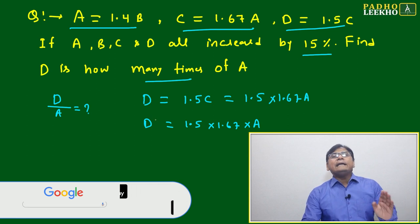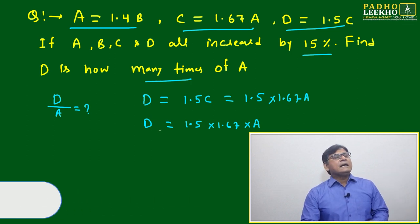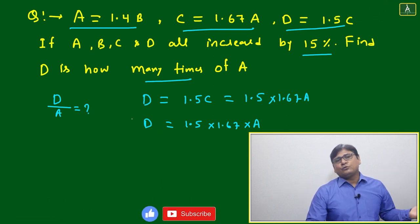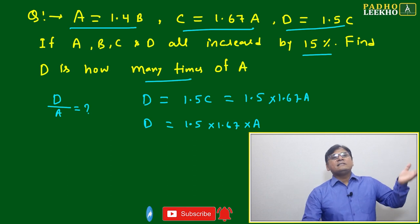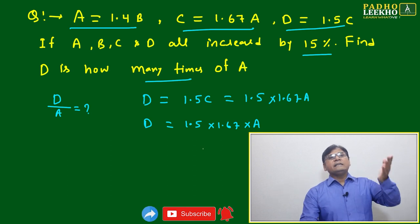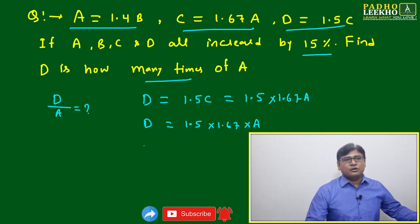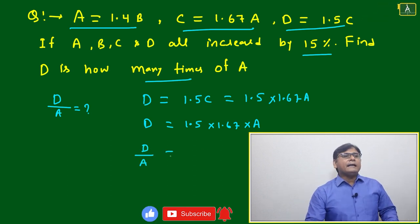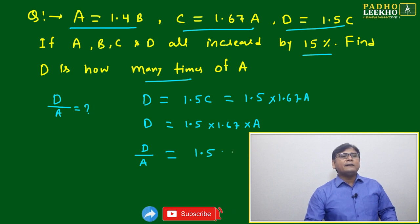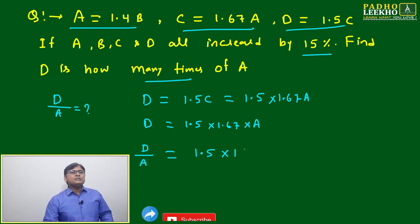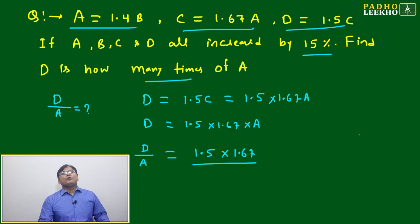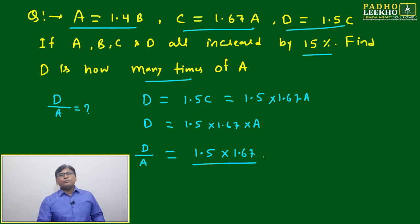So d equals 1.5 into 1.67 into a. If a and d both are changing by 15 percent, it is not going to affect your answer because d will also increase and a will also increase — both will be canceled out. Now we have to find d by a, which means we just have to find the multiplication of 1.5 into 1.67.